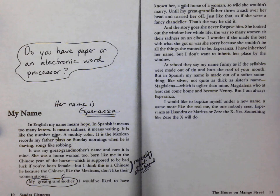She looked out the window her whole life, the way so many women sit their sadness on an elbow, probably putting their head in their hand and their elbow on a table, looking out the window, feeling trapped.